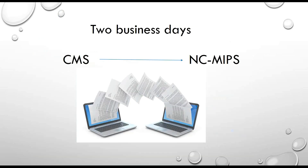Once you submit your information on CMS's RNA system, they send updates to us at the state and then those updates get loaded into NC MIPS. Again, it may take up to two business days for those updates to be seen in NC MIPS.